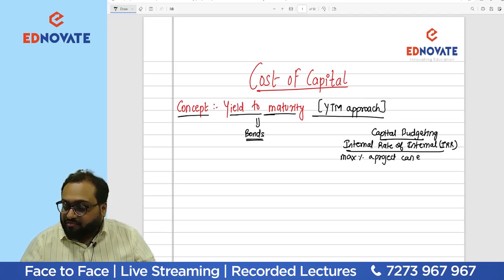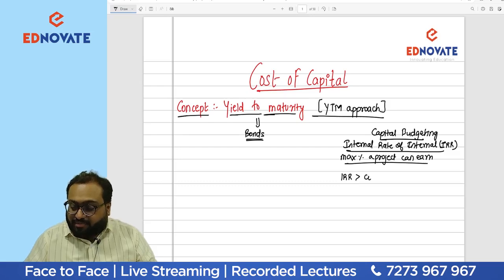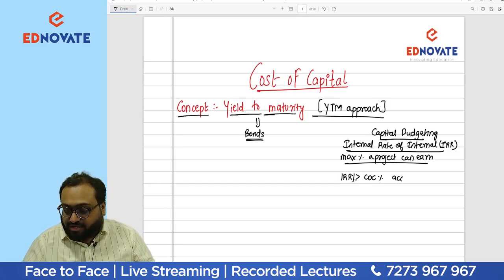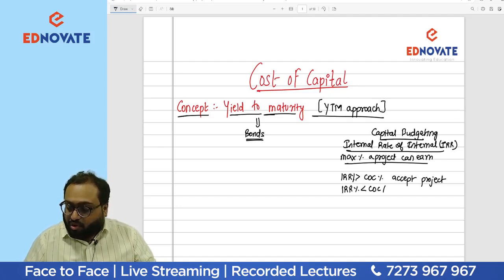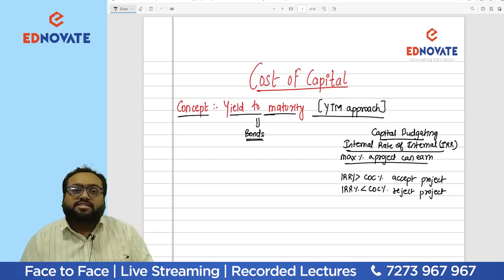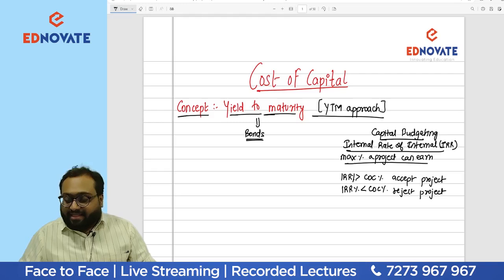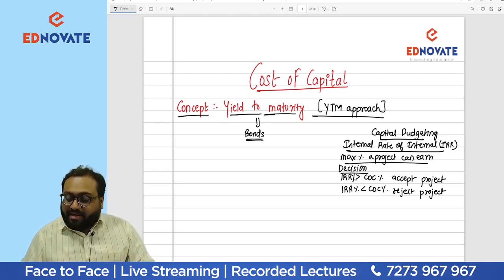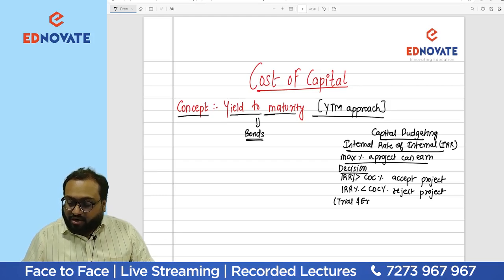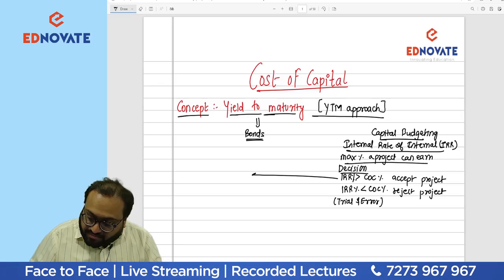If IRR is greater than the company's cost of capital, we accept the project; if IRR is less than cost of capital, we reject it. IRR represents the maximum capacity for a project to earn, and our accept/reject decision is based on it. IRR is found using the trial and error interpolation method.